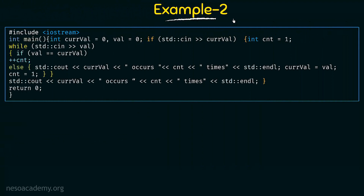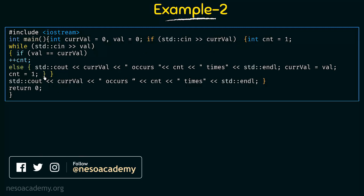Here in this second example, this is the same program as before, but I have written more things on single lines to compress it, so it looks smaller. The main function starts here, then variables are declared, then the if statement starts here, and the if block also starts here. Then we have the while and its block. I want to find out where the if block is — if starts here, but there are so many closing braces: one here, one here, one over here. I have to very carefully analyze to find which is the closing brace for the if block, and similarly for while and else.